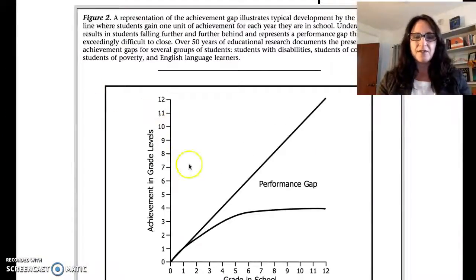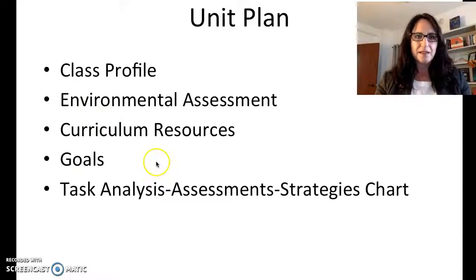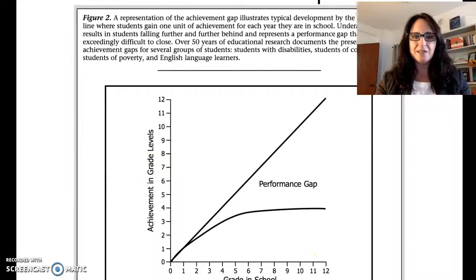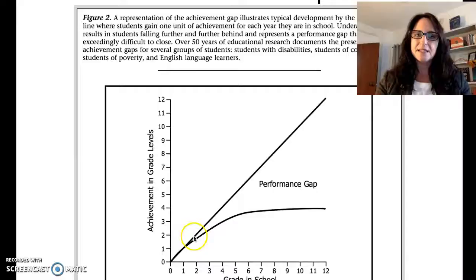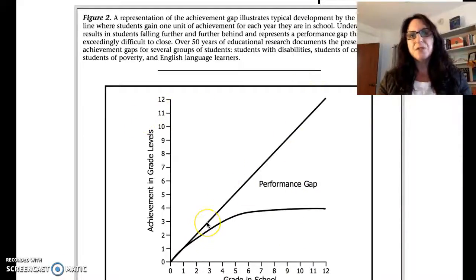This is a nice graph of the achievement gap. Down here it says grade in school and this is achievement in grade. You can see to start out with first, second grade everyone seems to be doing really well. What ends up happening is that you would think that in seventh grade you would be at the seventh grade of performance, 11th grade you'd be at 11th grade of performance.